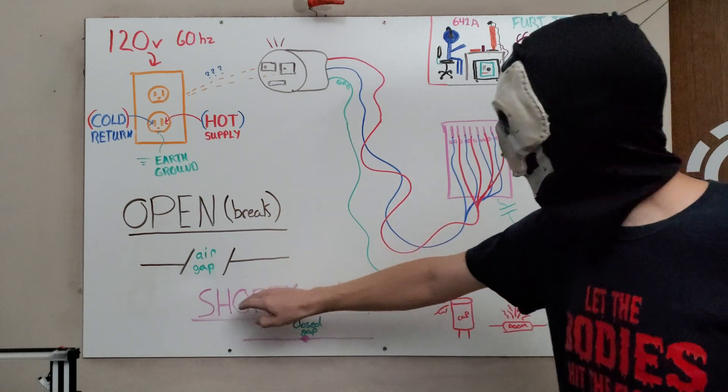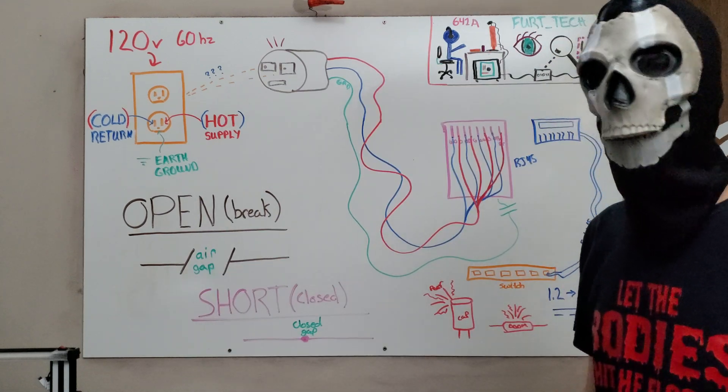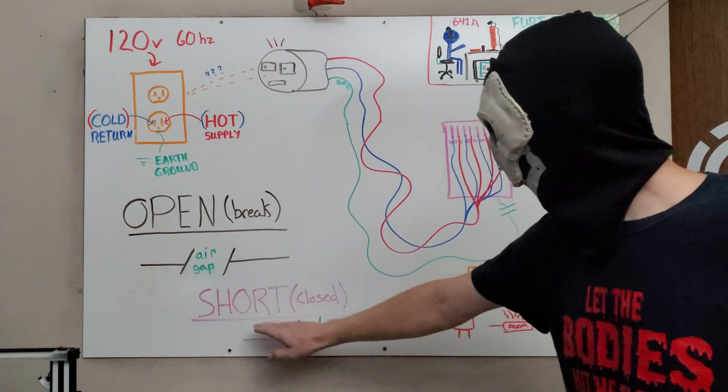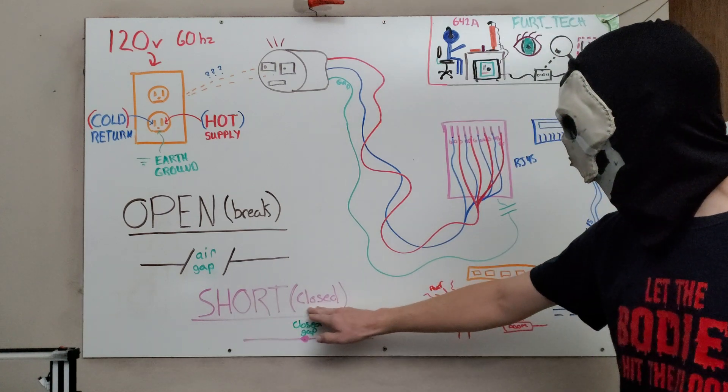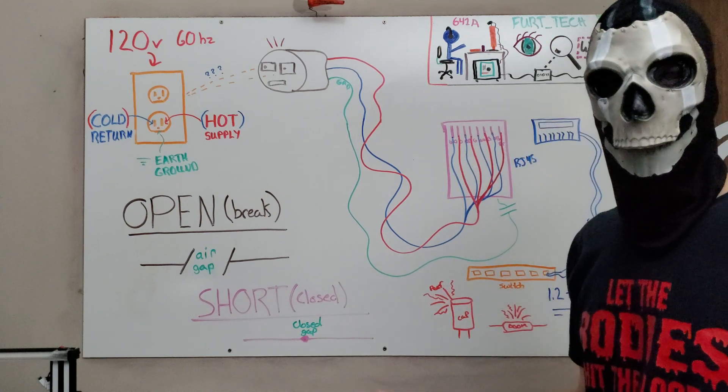Basically, what that's saying is we have an air gap between the two rails of our circuit. Now, the opposite, what we'd want to avoid in this situation, would be a short or a closed circuit. There's a closed gap, meaning it's a direct connection.